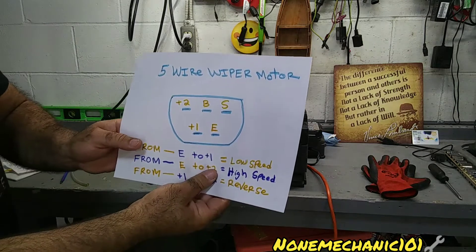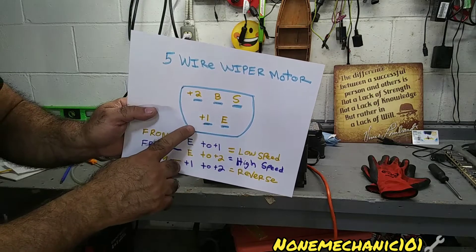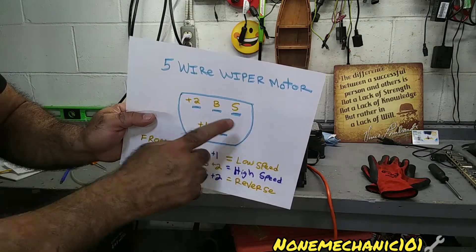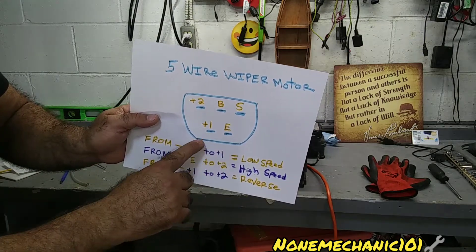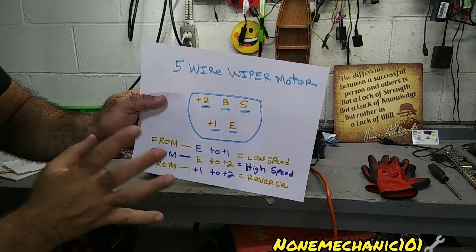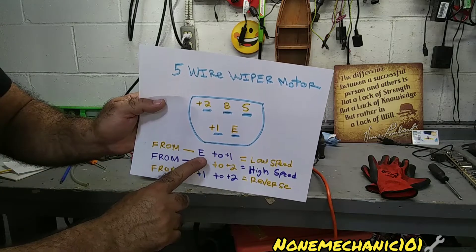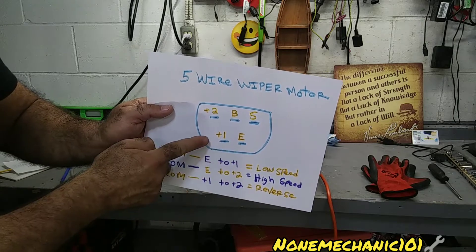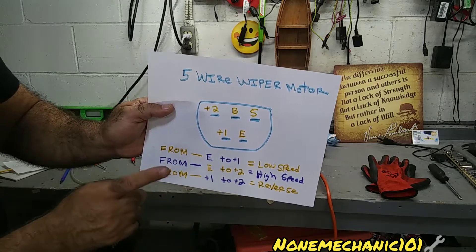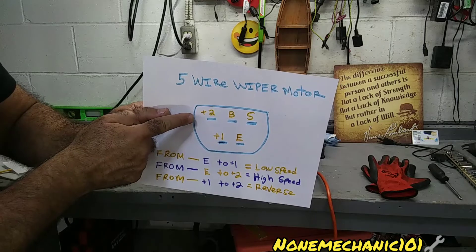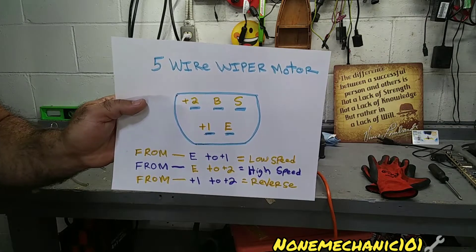Let me show you in here so you can see what's going on. This is the way it looks: the orientation is +2, BS, +1, and E. BS I don't know what is for. These blue parts are the metal pieces that are in there. Low speed: we're going to go from E to +1. High speed: from E to +2. And from +1 to +2 is reverse.